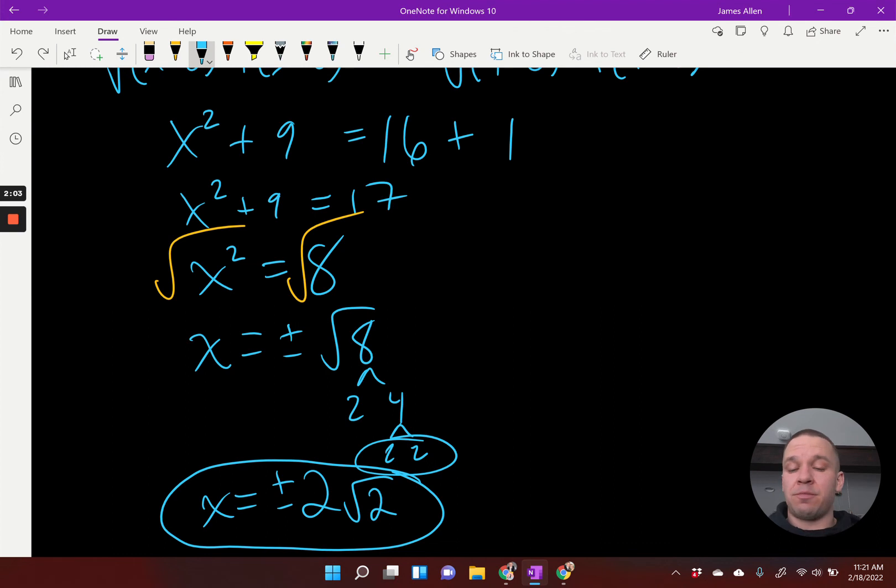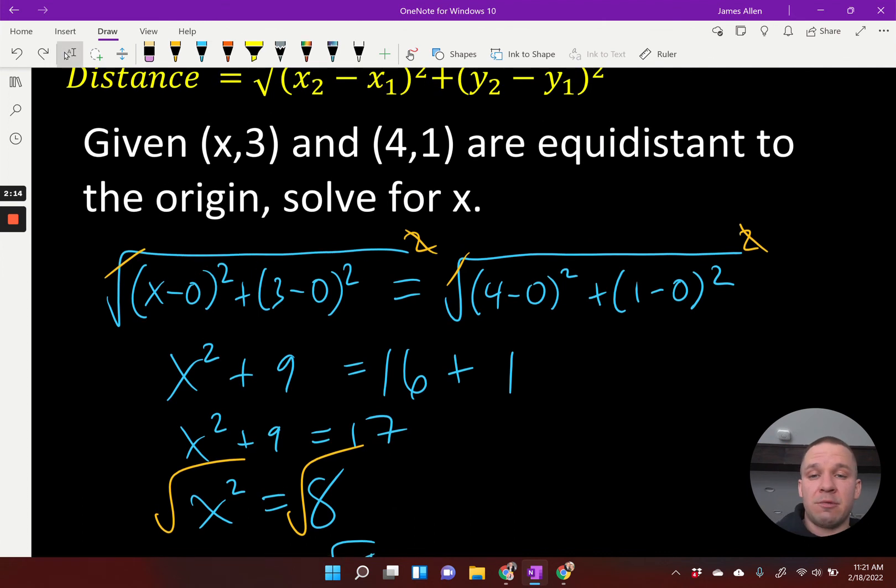So there we go. There's my final answer. Plus or minus 2√2. Not a very pretty answer. It's just a little bit less than 3, because the square root of 9 is 3. So the square root of 8 is a little less than 3. So again, there's two possibilities here that would work to have both (x,3) and (4,1) be the same distance to the origin. Equidistance means same distance.